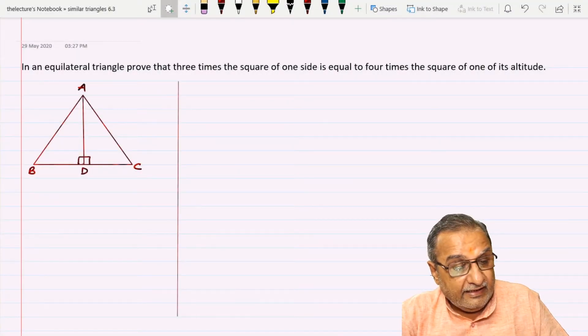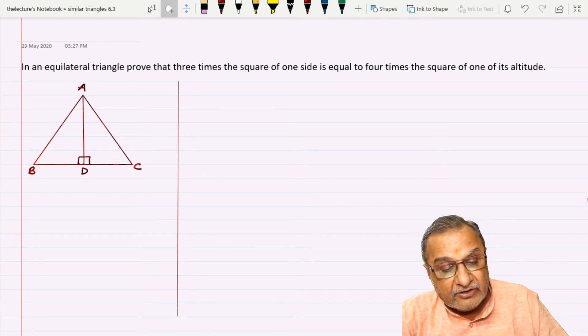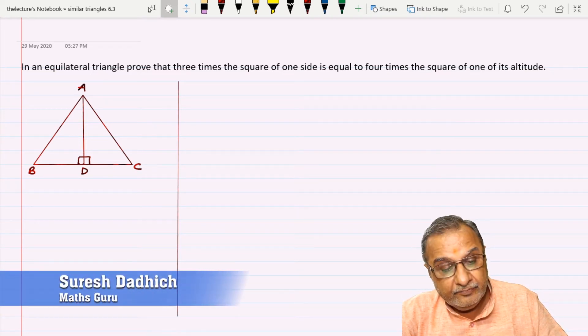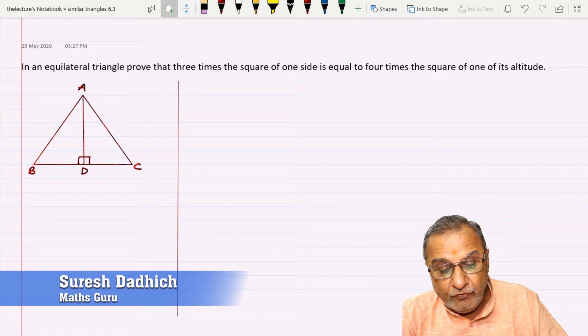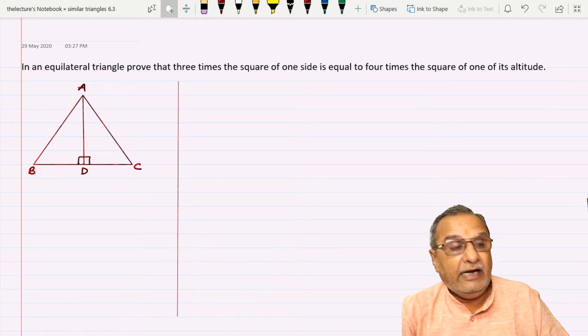The question is: in an equilateral triangle, prove that three times the square of one side is equal to four times the square of one of its altitudes.